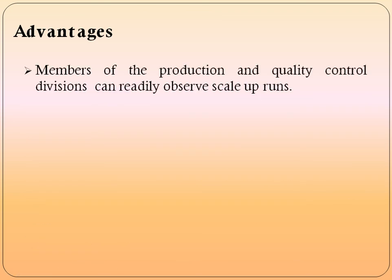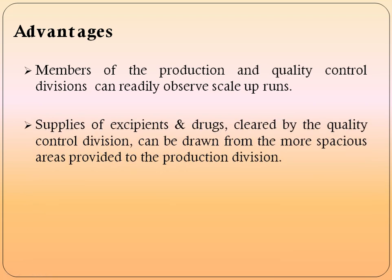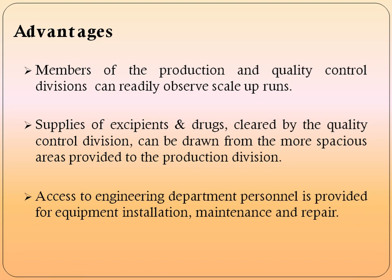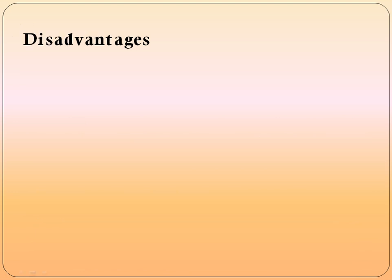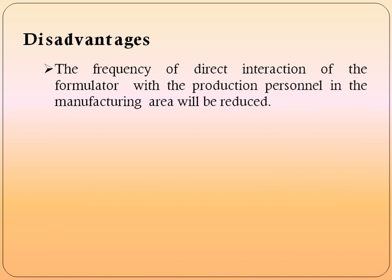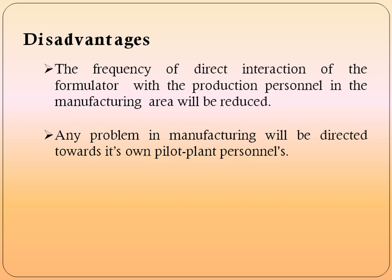Advantages: members of production and quality control divisions can readily observe scale-up runs. Supplies of excipients cleared by the quality control division can be drawn from the more spacious area provided to the production division. Access to the engineering department is provided for equipment installation, maintenance, and repair. Disadvantages: the frequency of direct interaction of the formulator with production personnel in the manufacturing area will be reduced, and any problem in manufacturing will be directed toward its own pilot plant personnel.